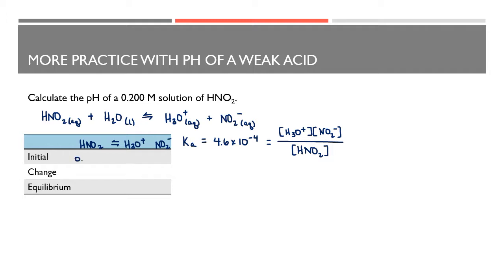So I have HNO₂ in equilibrium with H₃O⁺ and NO₂⁻. My initial concentration of HNO₂ is 0.2, and my initial concentration of hydronium is about 0 — in pure water there's a little bit, but it's so low we don't have to worry about it. I'm going to put the change in for each: minus x for reactants and plus x for products. Keep in mind the stoichiometry — the coefficients of the balanced equation — are very important in this change row.